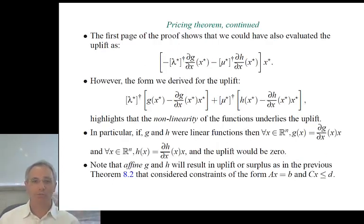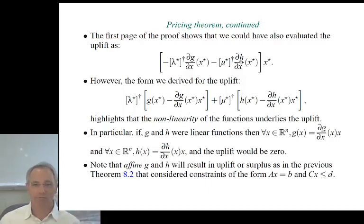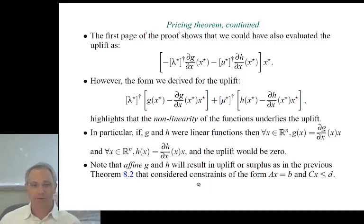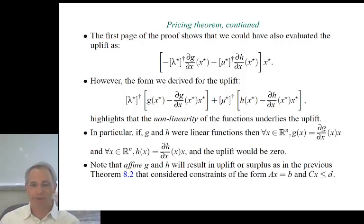Affine g and h would result in uplift or surplus as in the previous theorem with constraints of the form Ax=b, Cx≤d — which are affine constraints, though customarily called linear. The role of linearization is that the derivatives of functions g and h representing system constraints appear in the pricing rule. When we approximate a constraint function by neglecting its dependence on a system variable, we're approximating its derivative by zero, neglecting the corresponding term in the pricing rule.